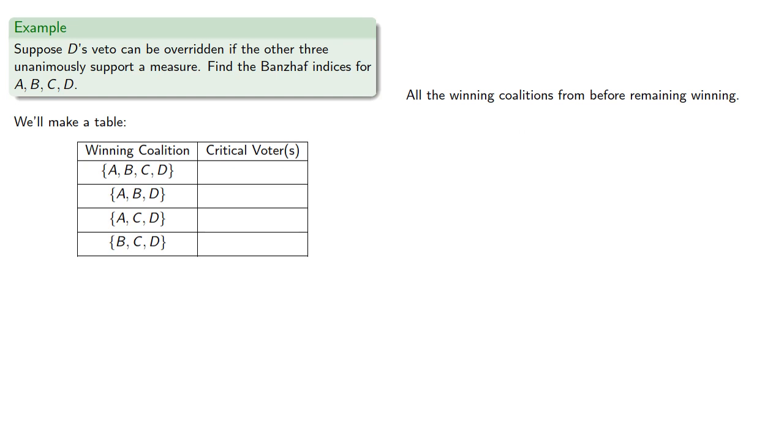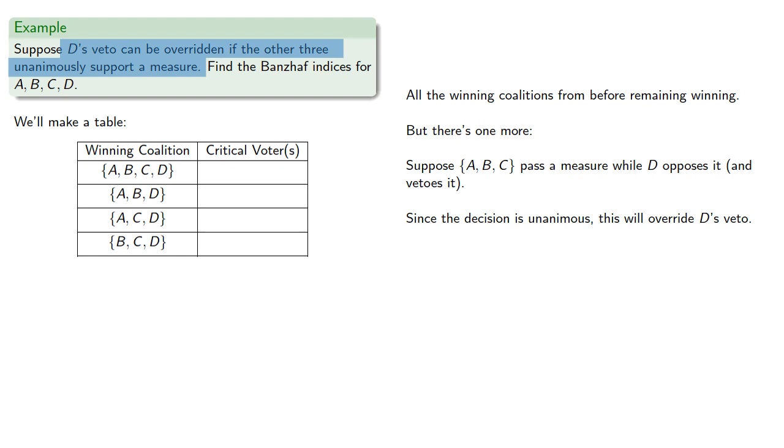But there's one more. Suppose A, B, and C pass a measure while D opposes it and vetoes it. Since the decision to pass a measure was unanimous, this will override D's veto. So A, B, and C is a winning coalition.